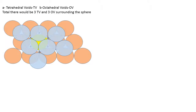So, focusing on the yellow colored sphere, I can see that there are 3 tetrahedral voids and 3 octahedral voids surrounding the sphere. Because this arrangement is a 3D closed packing — meaning there will be a layer of spheres above the yellow colored sphere as well as below — and because it is a crystal arrangement, it is a uniform arrangement. So there will be similar voids above and below the yellow colored sphere.